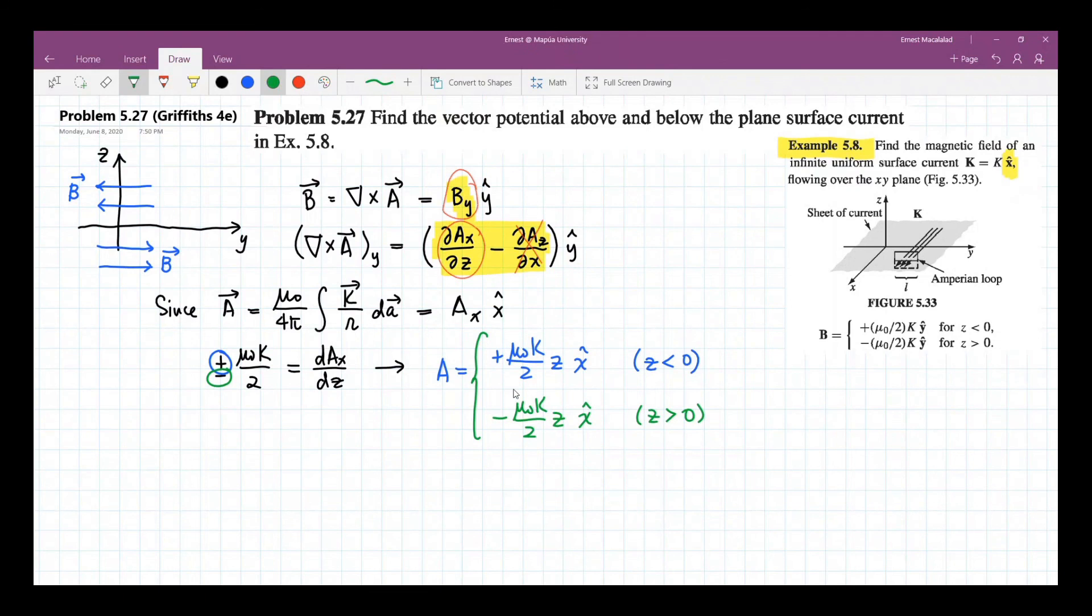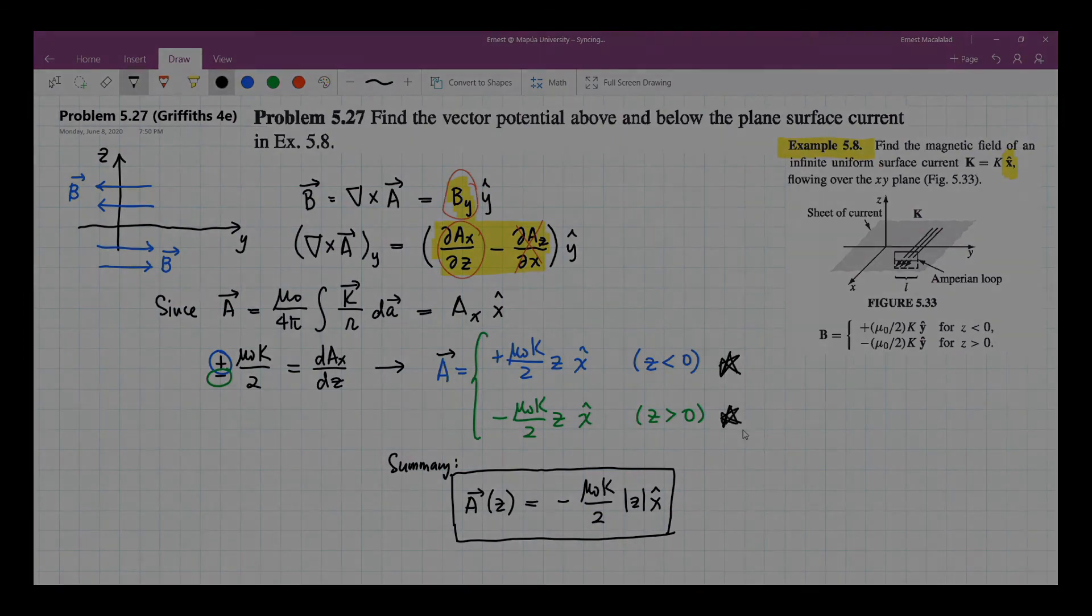So this can now be summarized as follows. This A vector can now be simplified as a vector in terms of z but along the x direction. This is equal to negative mu naught k over 2 times the absolute value of z x hat. So this result should cover both cases.